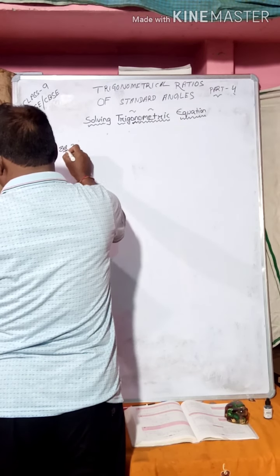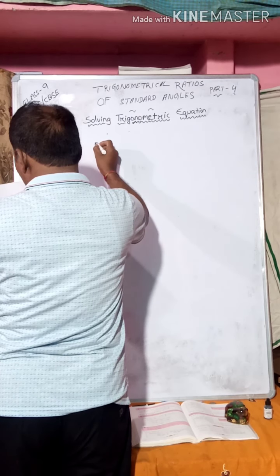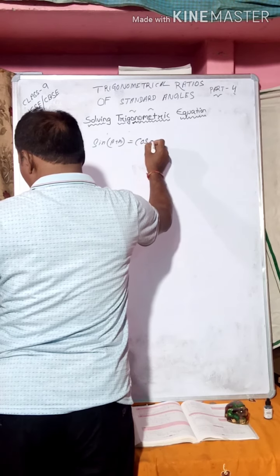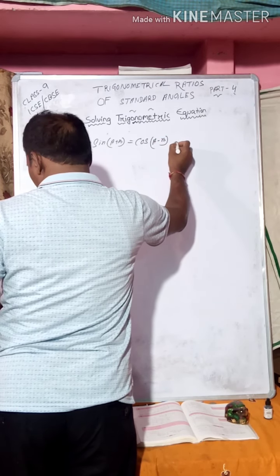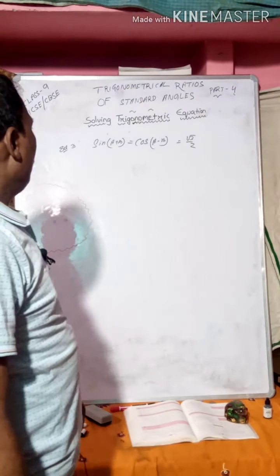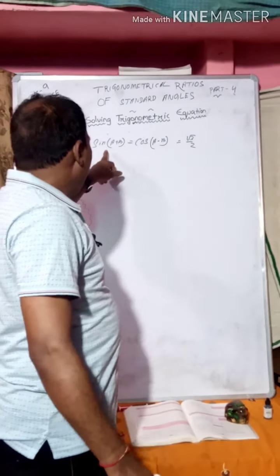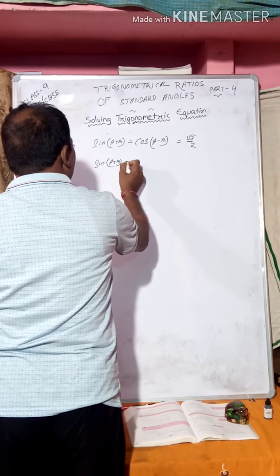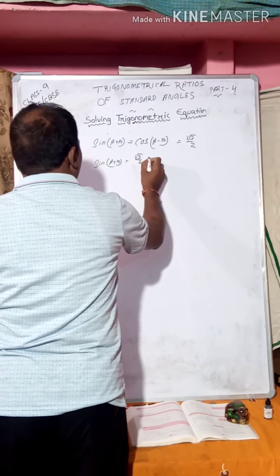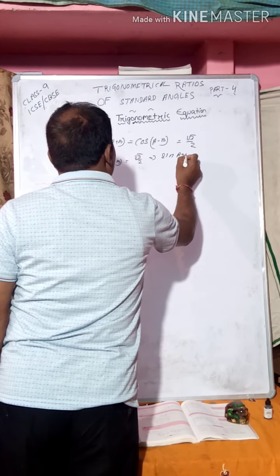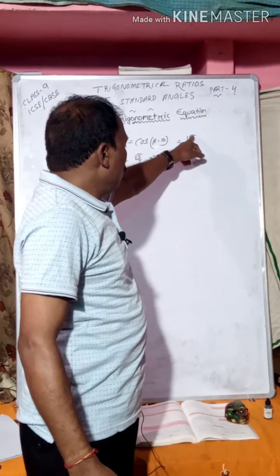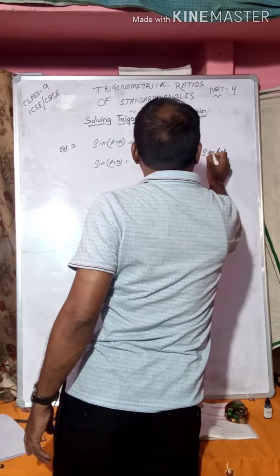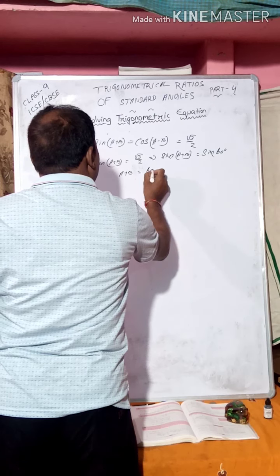Example 3: sin(A+B) = cos(A-B) = √3/2. Find the values of A and B. First take sin(A+B) = √3/2. We know sin60° = √3/2, so sin cancels giving A + B = 60°. This is equation 1.